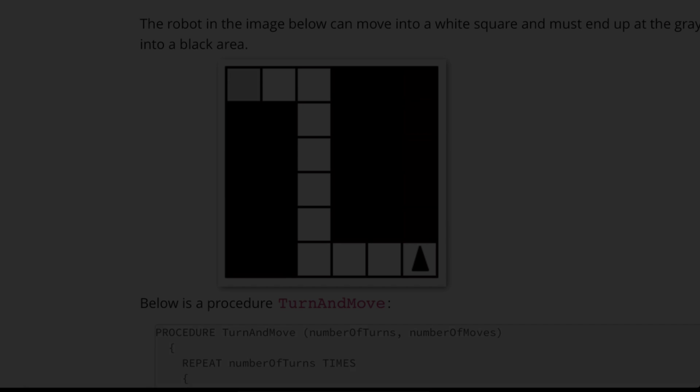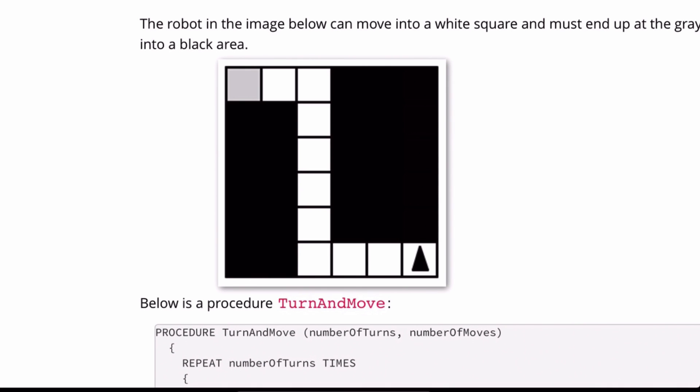Alright, so let's look at our robot. We have our robot facing up in the bottom right corner. To get him to the gray block in the top left, we have to first rotate or turn one time left. So that way, we can get him facing this way. So I'm going to write that down, rotate left one time.